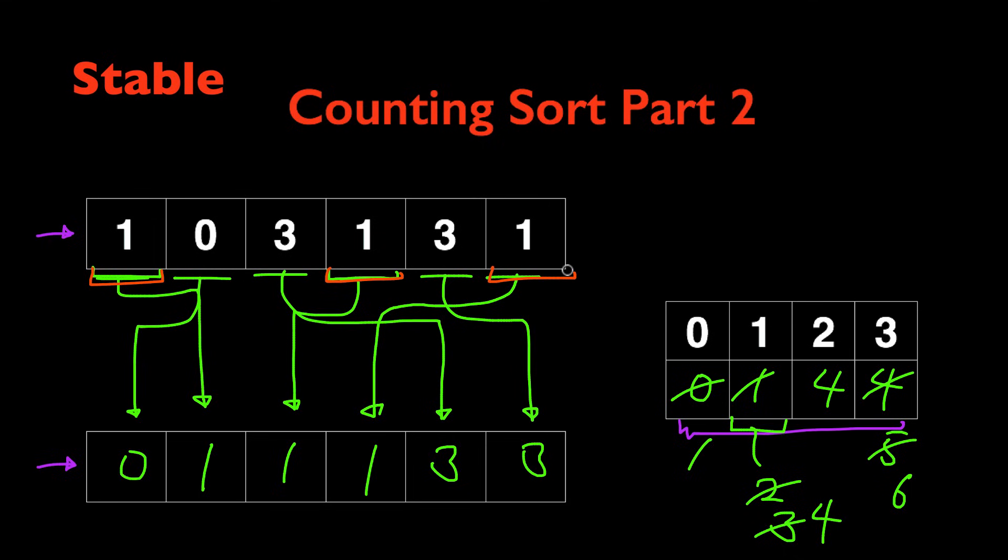The order in which they appear in the new sorted array is exactly the same as the order in which they appear in the original array. This wouldn't matter if they were just number 1.